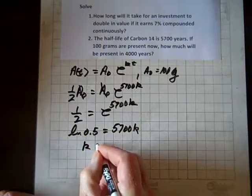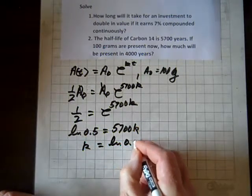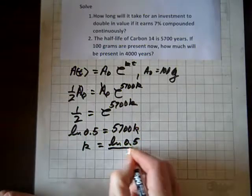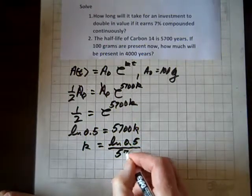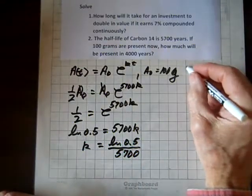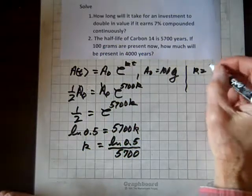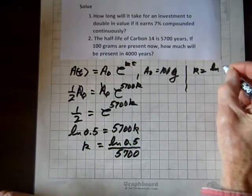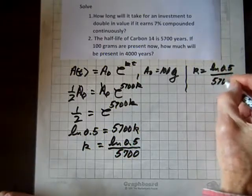Now to isolate k, we'll just divide both sides by 5,700. And now we've got k. So I'm going to make a note of that. k equals ln of 0.5 divided by 5,700.